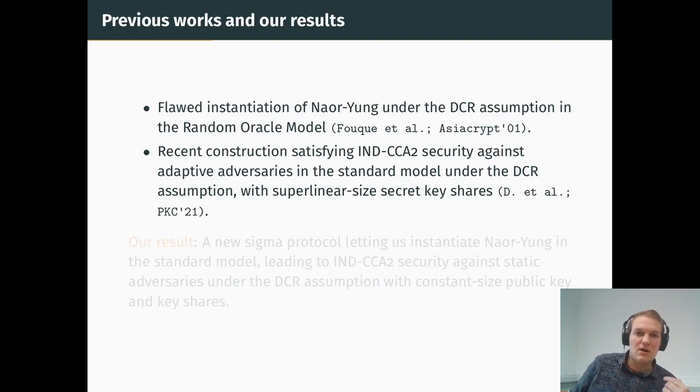In this setting, Naor-Yung was already instantiated under the DCR assumption, but the proof they used for plaintext equality, the proof system they used was flawed, so it does not really hold anymore. We could also compare our results with one of our previous works, where we give also a TPKE under the DCR assumption that satisfies the IND-CCA2 security against adaptive adversaries in the standard model, but it has the drawback that the key shares grow with the number of servers.